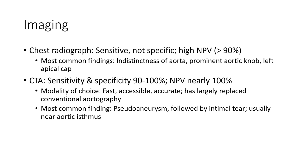CTA is highly sensitive and specific, with sensitivity of 90 to 100% and NPV of nearly 100%. It is the modality of choice — accessible and accurate — and has largely replaced conventional aortography. The most common CTA findings are periaortic hematoma followed by intimal tear, usually near the aortic isthmus.